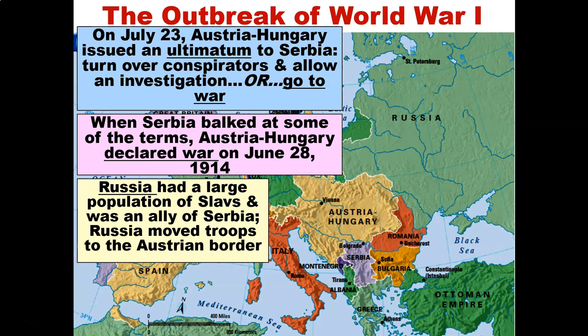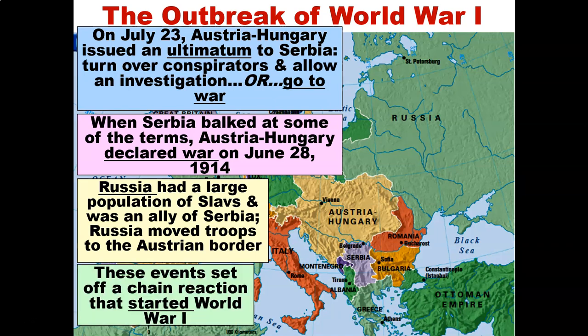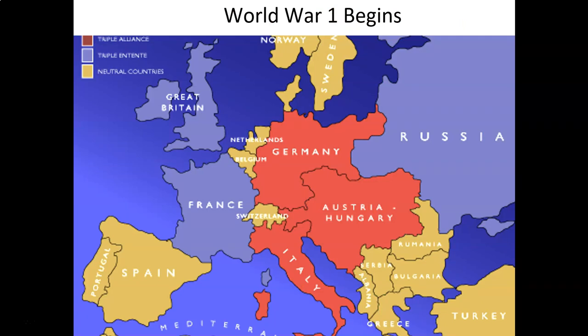Russia had a large population of Slavs and was an ally of Serbia. Russia moved troops to the Austrian border. This event set off a chain reaction that started World War One. As World War One begins, Europe goes through a conflict they had never seen before.